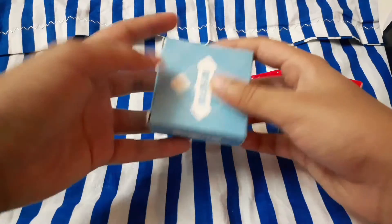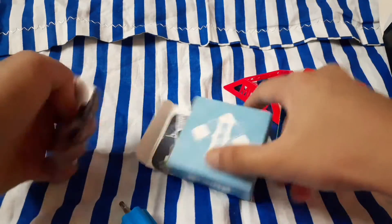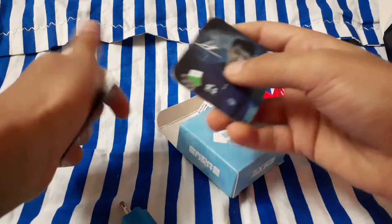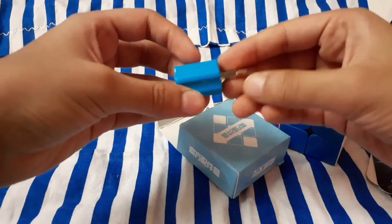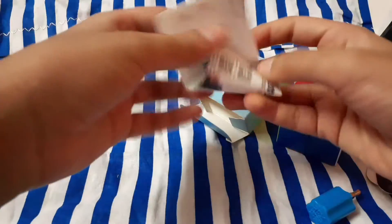Inside the accessories box there were some more YuXin team cards, a screwdriver, and a pamphlet.